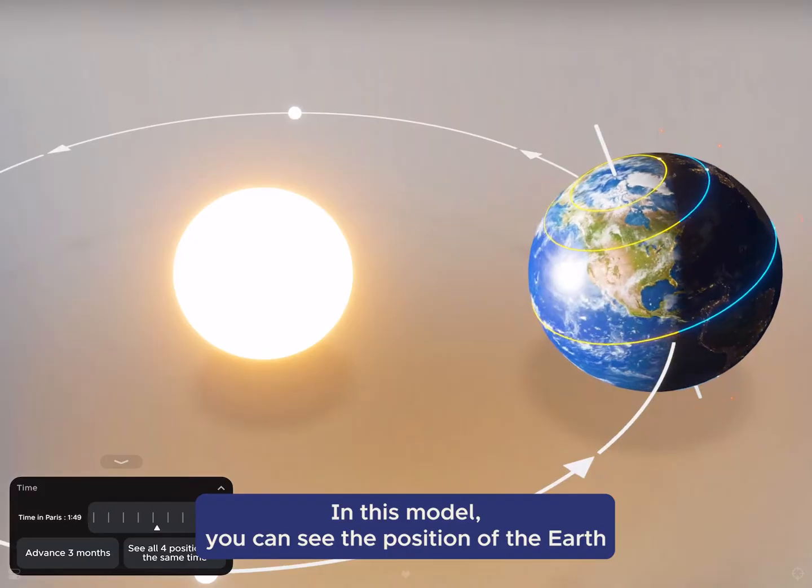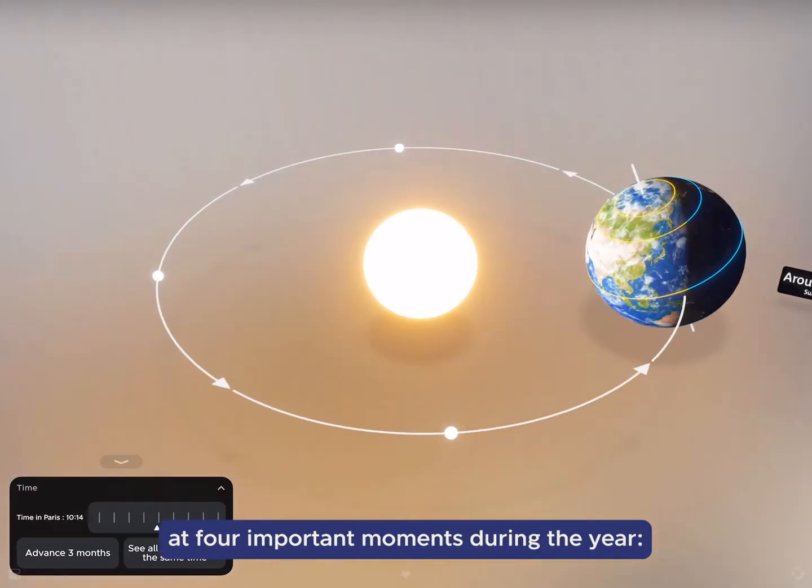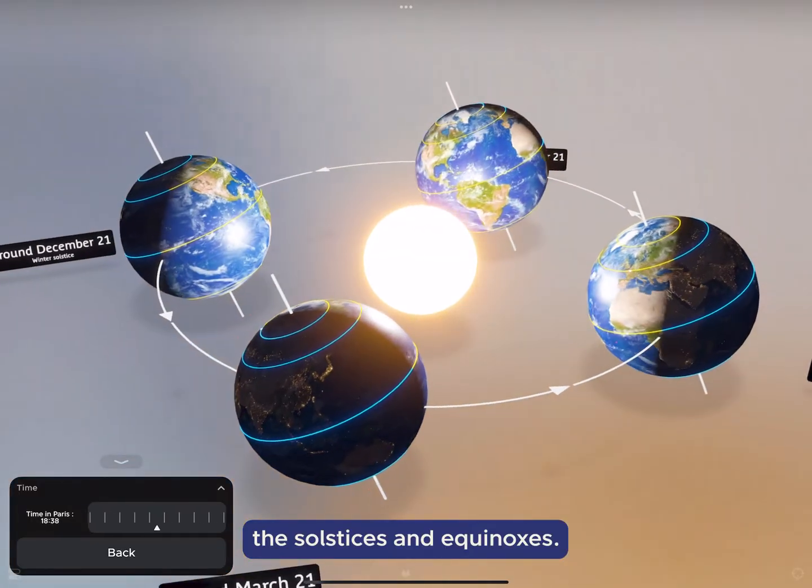In this model, you can see the position of the Earth at four important moments during the year. The solstices and equinoxes.